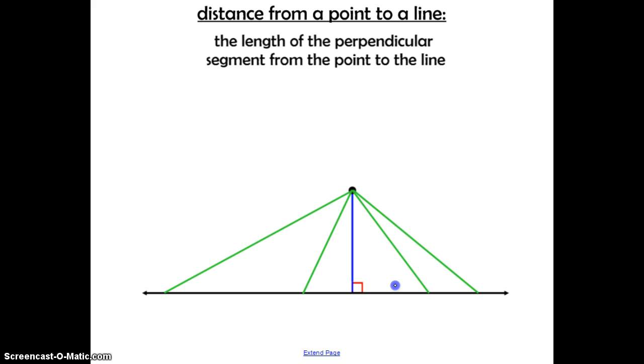We learned in a previous unit that given any point and any line, there is only one segment that can be perpendicular to the line that goes through that point. So if we measure this, that is how we define the distance from this point to that line.